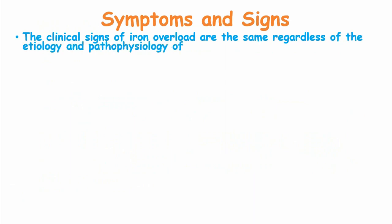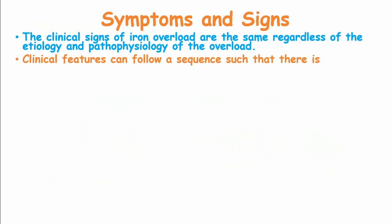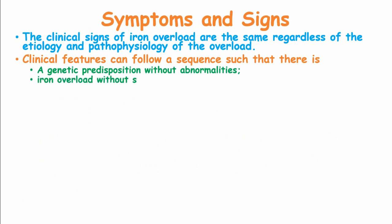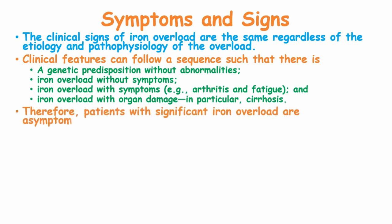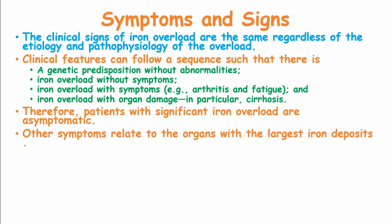The clinical consequences of iron overload are the same regardless of the etiology and pathophysiology of the overload. Clinical features can follow a sequence: first, genetic predisposition without any abnormalities; then iron overload without symptoms; developing to iron overload with symptoms such as arthritis and fatigue; and lastly, iron overload with organ damage, in particular cirrhosis. Many patients with significant iron overload are asymptomatic, while other symptoms related to organs with the largest iron deposits can also develop.